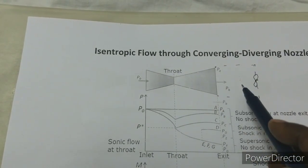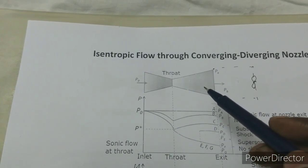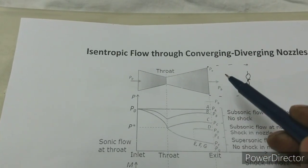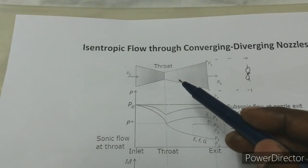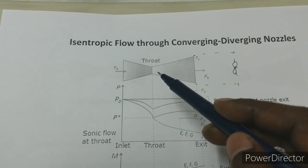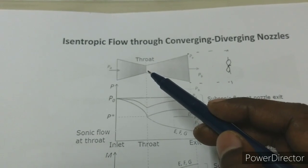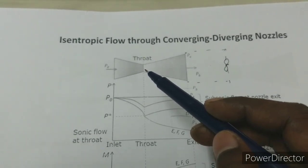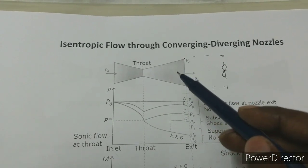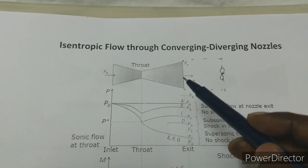When the back pressure Pb is sufficiently low, the flow gets accelerated in the convergent section. As you see in the subsonic case, flow will be accelerating through the subsonic section with a drop in pressure. When it flows through the divergent section, the flow is still subsonic. At the throat section, flow is at subsonic velocity. When subsonic velocity exists at the entry of the divergent section, it will act as a subsonic diffuser. In the subsonic diffuser, there will be a pressure rise and a velocity drop.